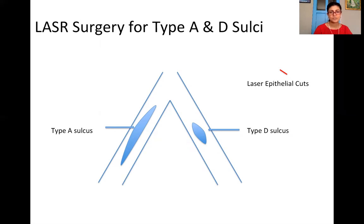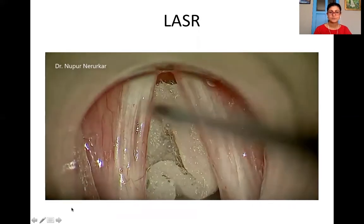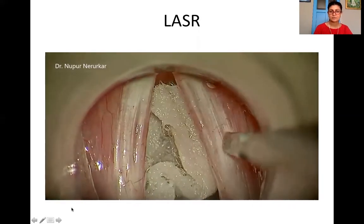The surgery was performed with a CO2 laser in scanning mode. The AccuBlade was used with a length of 0.3 to 0.5 millimeters and a depth of one, which is 250 microns. Cuts were made at 90 degrees to the lip of the sulci so as to release them. Whether type A or type D, we also operated bilaterally. Here is a short video clip to demonstrate the surgery being performed.